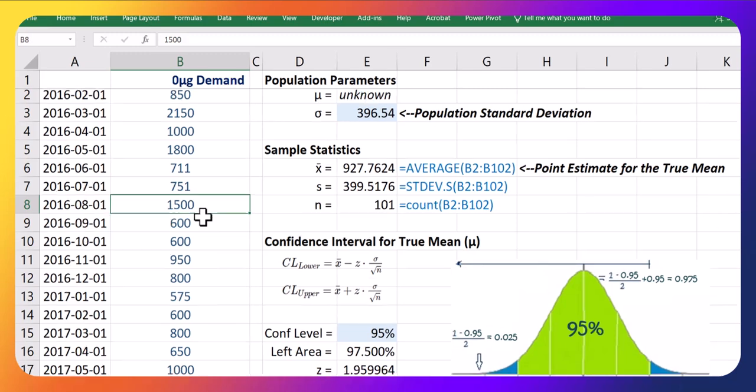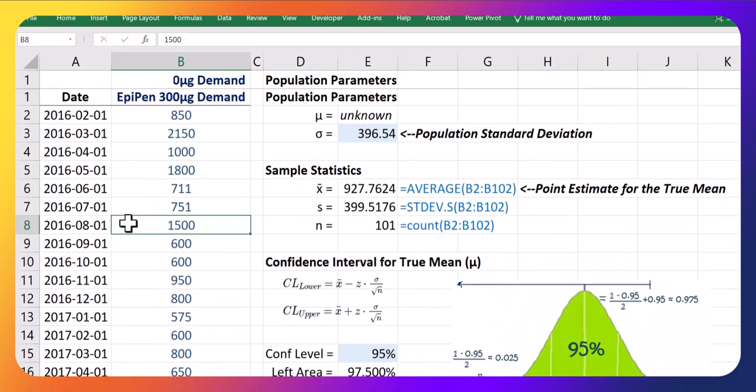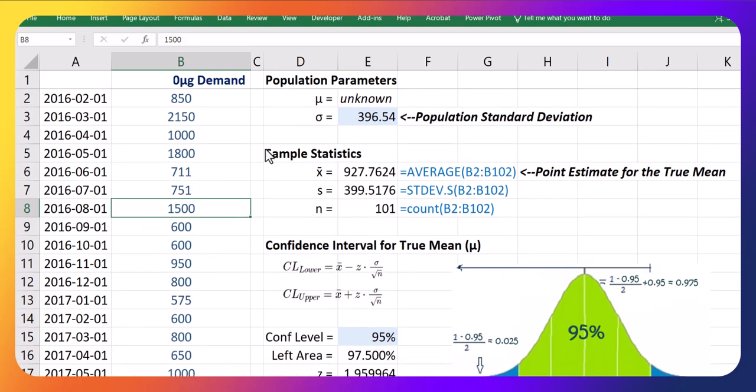Okay, so what we have in this case is we have this EpiPen demand data, and it varies over time. So, what I previously stated was that we sampled 101 data. And that's not entirely untrue. What we did do was collect 101 months of demand data.